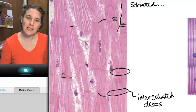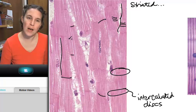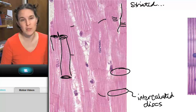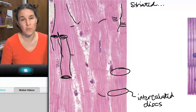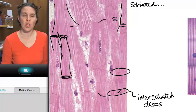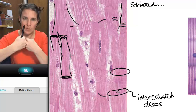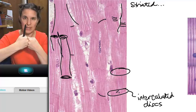Intercalated discs are these unique structures that connect two cardiac muscle cells to each other. At an intercalated disc, this would be one cardiac muscle cell. Here's an intercalated disc, which means that this is another one. Here's another intercalated disc, which means this is another one. Intercalated discs connect cardiac muscle cells end to end.